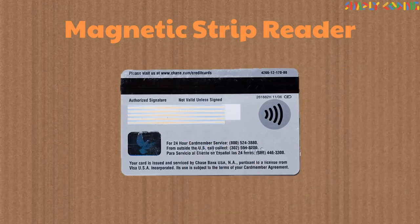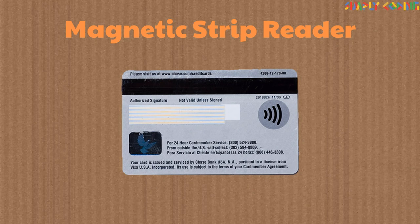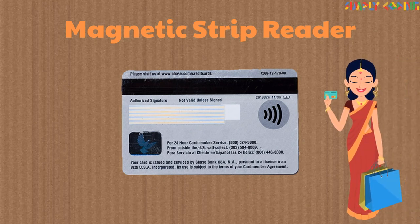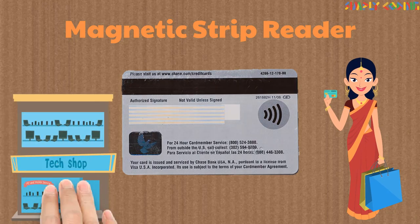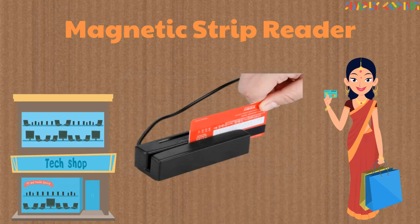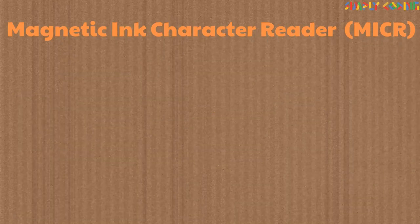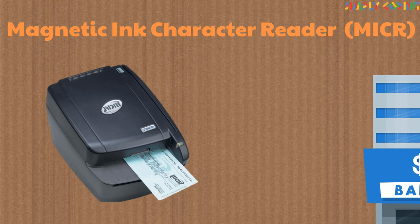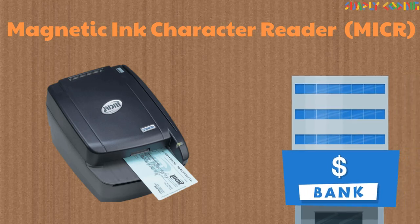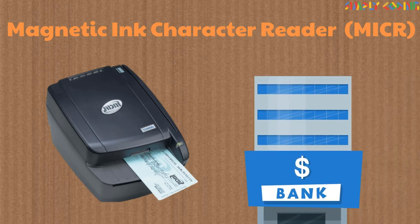Many credit cards and security cards have a magnetic strip on the back. This strip has user data encoded on it and is read by the machine when swiped. This machine is also called a magnetic strip reader. Similarly, there are Magnetic Ink Character Readers, or MICR, which can read user data on bank checks.